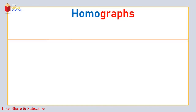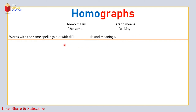अब हम confusing words की second type पर आते हैं — which is homographs। Homo means same और graphs means writing। Homographs ऐसे words हैं जो writing में same हैं, यानि जिनके spellings same होते हैं। Homographs को हम इस तरह define करते हैं: words with the same spellings but with different sounds and meanings।